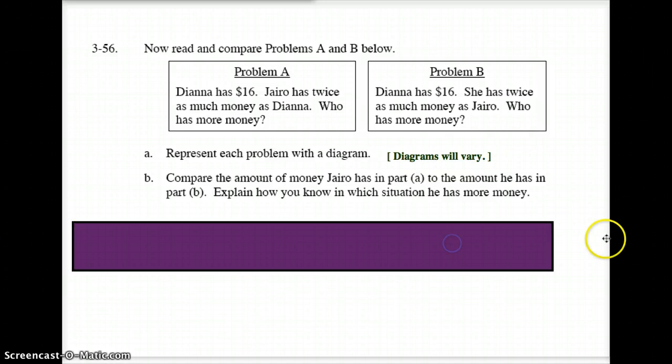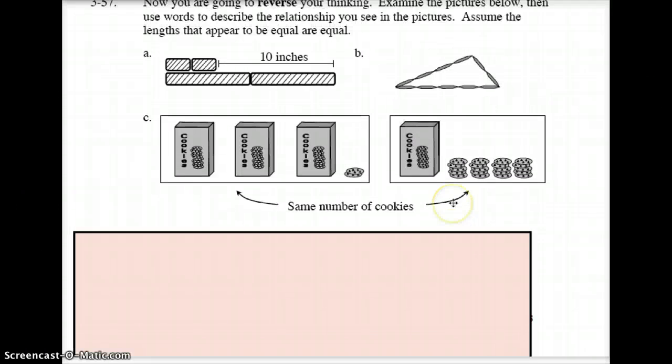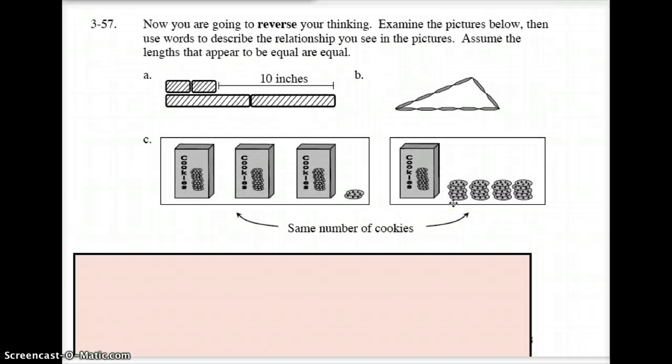Moving on, question 57. I really like this question. We're going to kind of reverse our thinking. We're going to give you the picture and now we've got to come up with the word problem. So picture A, you got two short boards and you got two long boards. Come up with a word problem for that one. Pause the video and come up with in your head or on paper, write down what you think that should be.